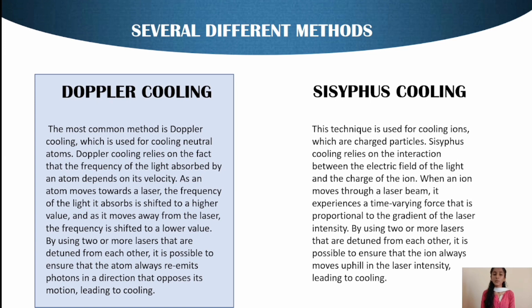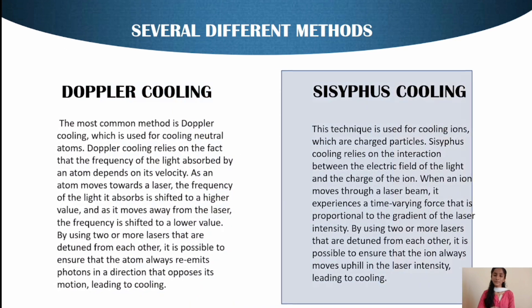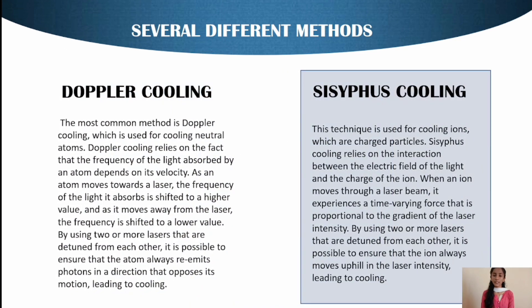There are several different methods of laser cooling. The first one is Doppler cooling. Doppler cooling is the most common method used for cooling neutral atoms. Doppler cooling relies on the fact that the frequency of the light absorbed by an atom depends on its velocity. As an atom moves towards a laser, the frequency of the light it absorbs is shifted to a higher value, and as it moves away from the laser, the frequency is shifted to a lower value. By using two or more lasers tuned from each other, it is possible to ensure that the atom always re-emits the photon in a direction that opposes its motion, leading to cooling.